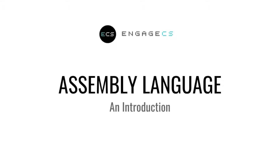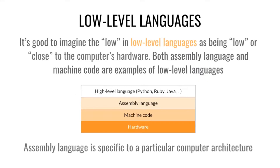In this lecture we'll explore assembly language and we'll use Arduino's inline assembly to write some assembly-like code. It's good to imagine low-level languages as meaning lower or closer to the computer's hardware. So between high-level languages like Python, Ruby, and Java, and the hardware, there is a language called assembly language which is converted into machine code. Machine code is the zeros and ones — the binary — but that's always represented in hexadecimal. You'll see a symbol like 0x and then a bunch of hexadecimal numbers to represent that machine code instruction.